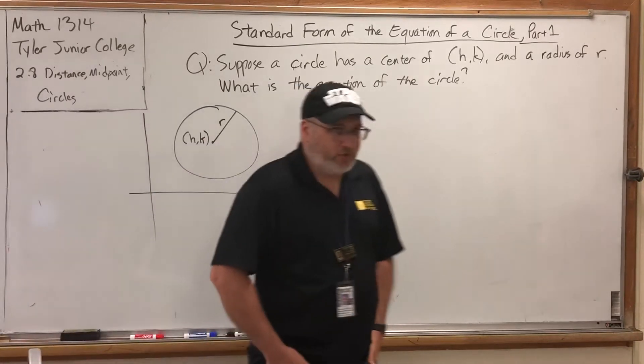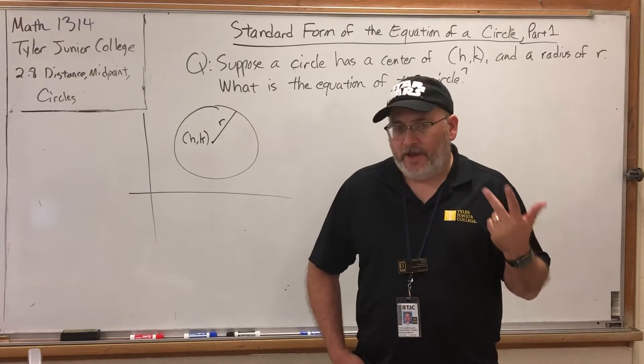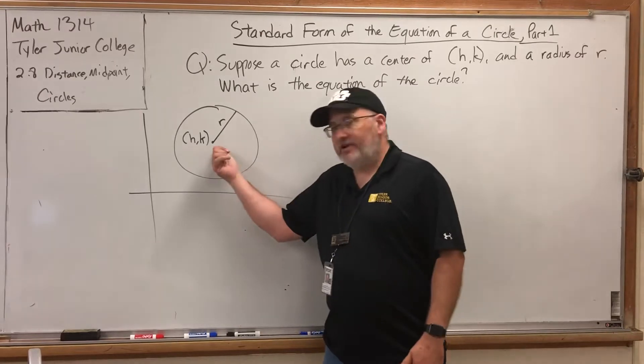So what makes a circle a circle? Two things. A center and a radius. The center is exactly what it sounds like. The middle of the circle.